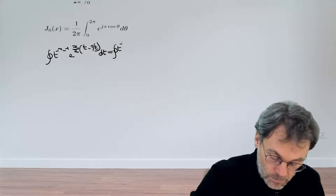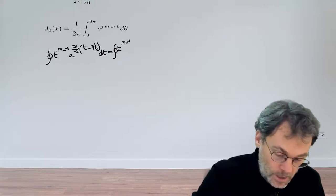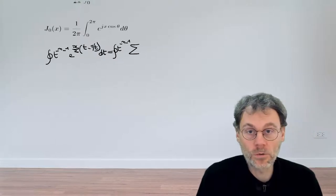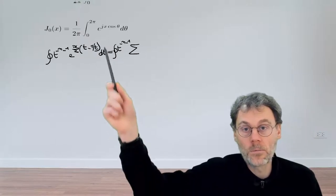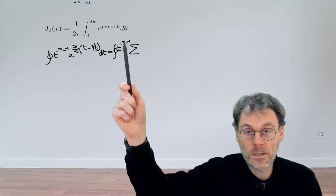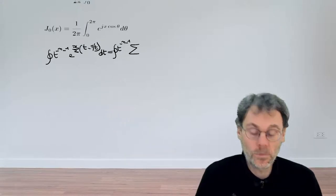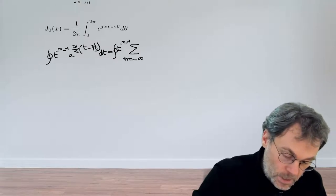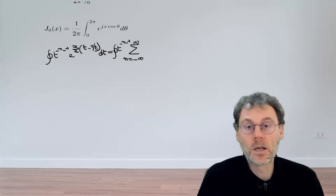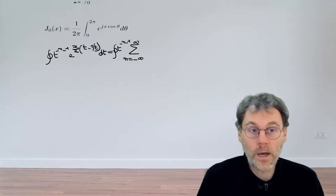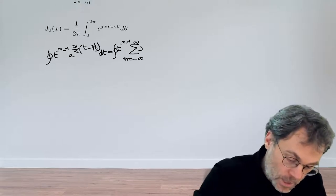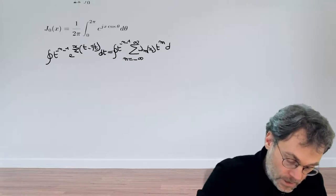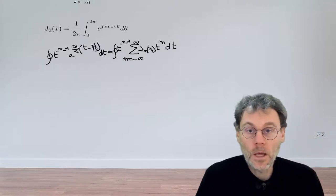That brings us t minus 1 minus n. And then we have a sum. Now for our Laurent series, we're not going to use n because we already have the index n here signifying something completely different. So we should use a different variable. Let's use m in this case. So m is running from minus infinity to plus infinity, and then we have j_m of x, t to the power of m, dt.